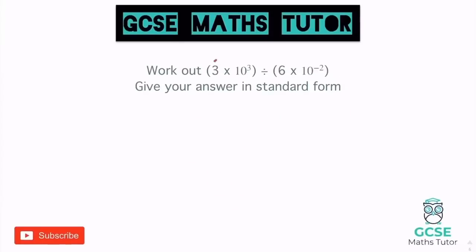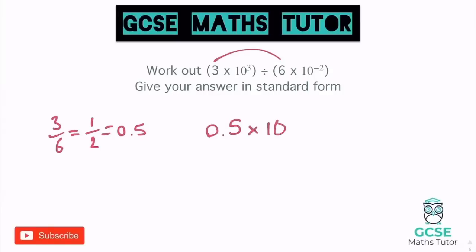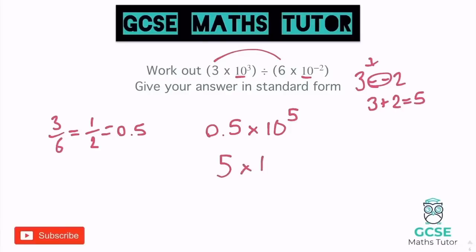For the division: 3 ÷ 6 written as a fraction simplifies to 1 half, which I'll write as 0.5. For the powers, we subtract: 3 minus negative 2 turns into 3 plus 2, giving a power of 5. So we have 0.5 × 10⁵. This needs to be in standard form: to make 0.5 into 5, we make the number one place value bigger, so the power drops from 5 to 4. Final answer: 5 × 10⁴.